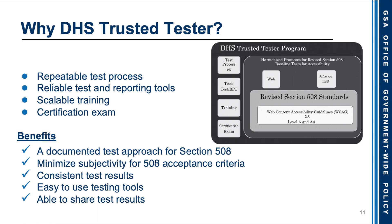The image on this screen talks about the test process version 5, the testing tools, training, and certification exam on the outside of a container for the harmonized process for revised Section 508 baseline test for accessibility. This combines web and software test processes, with softwares to be determined soon, and the revised Section 508 standards that harmonize with the Web Content Accessibility Guidelines, or WCAG, 2.0, Level A and AA.